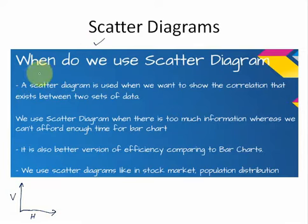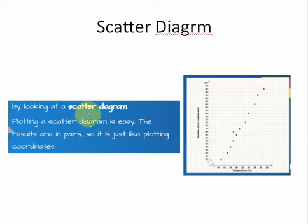By looking at the Scatter Diagram, plotting of the Scatter Diagram is easy. Plotting of the Scatter Diagram just looks like this. These values are our x and y axis values or horizontal and vertical values, just like the coordinates. So we plot the coordinates after taking the information and then we analyze what sort of Scatter Diagram this is.